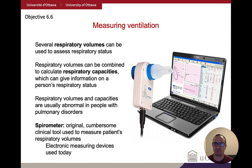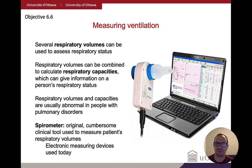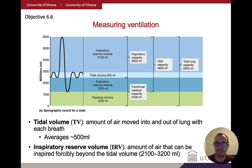Ventilation can be measured using a spirometer — once a cumbersome analog machine, now electronic and connected to a laptop. Much like an ECG for the heart, a spirometer can provide a wealth of information about how the lungs are behaving and whether they're achieving homeostasis. It measures various respiratory volumes — how much air can be taken in or pushed out.